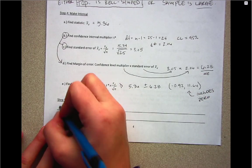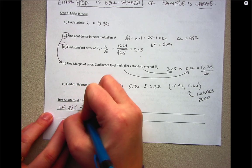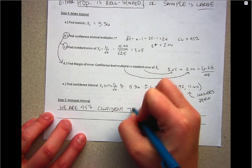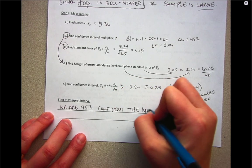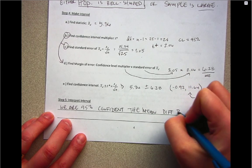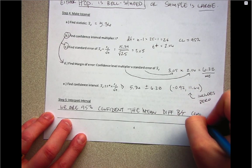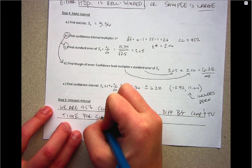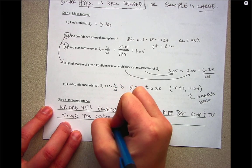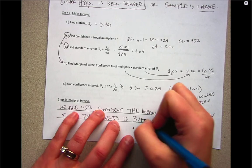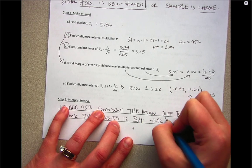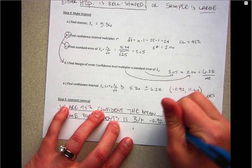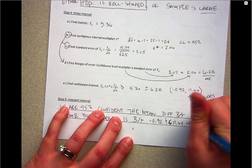Same as before, we identify how confident we are. Here we are 95% confident. Then we state our parameter: the mean difference between computer and TV time for students is between -0.92 and 11.64 hours per week.